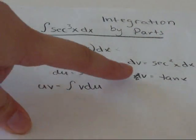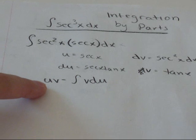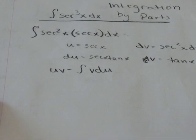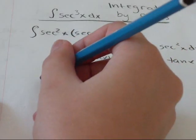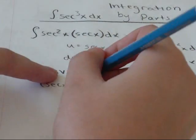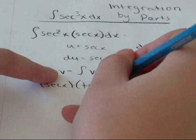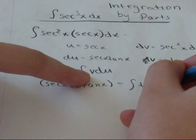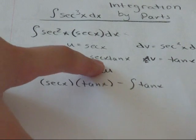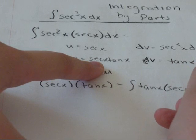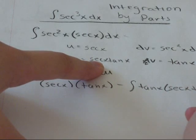Now we're going to plug our four variables into this equation. So uv minus the integral of v du: u is secant x, v is tan x, minus the integral of v tan x du, secant x tan x. And don't forget your dx.